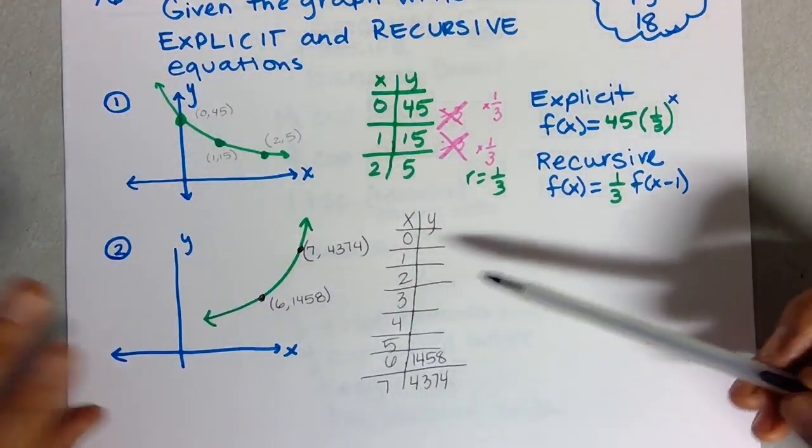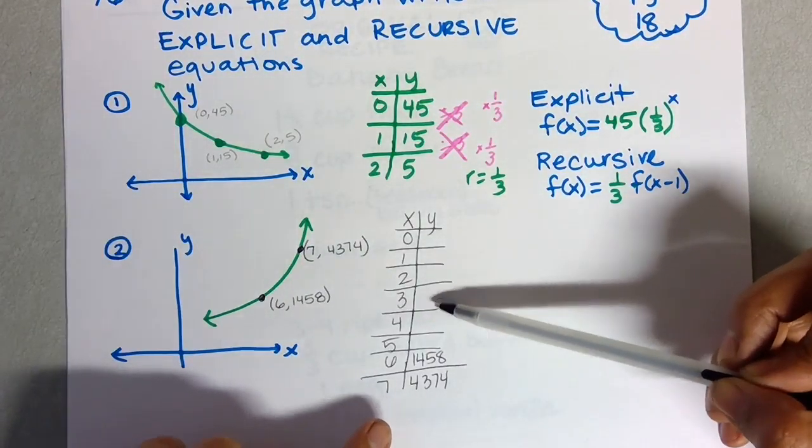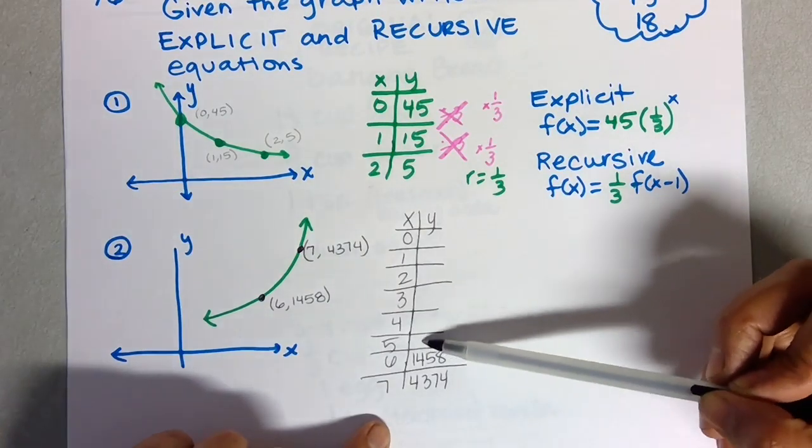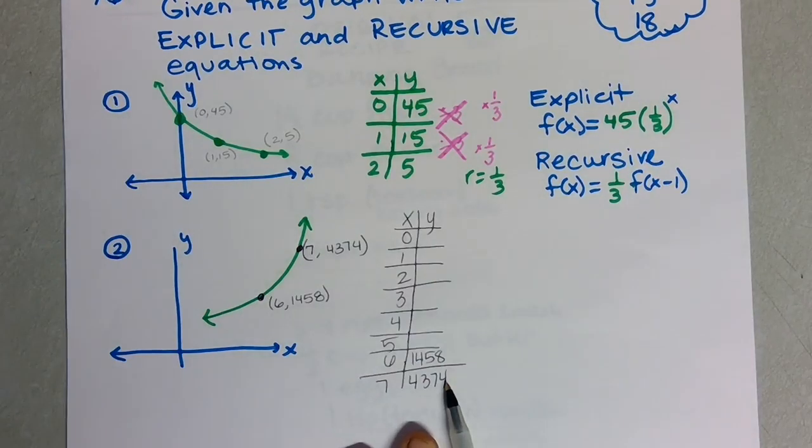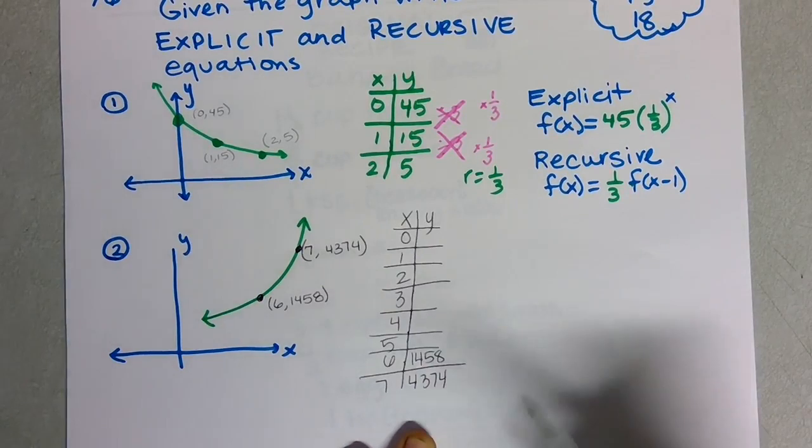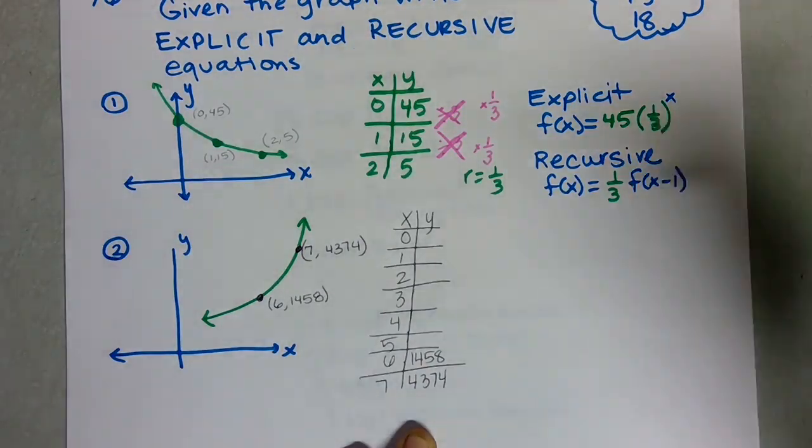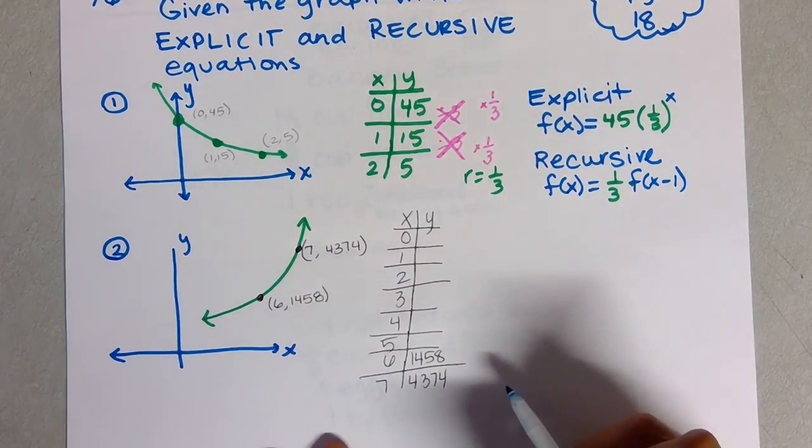Whenever you have a geometric equation and you have two consecutive terms—meaning one right after the other, like if I had the second and third term, the fourth and fifth, or the sixth and seventh term—you can always take the second number and divide it by the first one, and that'll give you your ratio.